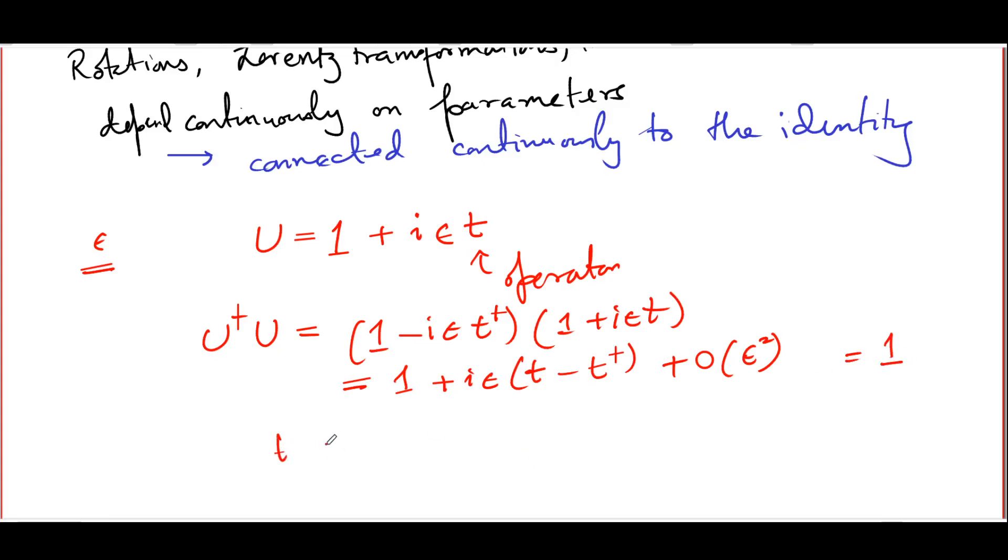And this immediately tells me that the operator t has to be a Hermitian operator. So notice that whenever we have a symmetry transformation which is infinitesimally close to the identity, you automatically get a corresponding Hermitian operator t in the play. And Hermitian operators correspond to observables. In fact, most physically important observables arise in this particular manner.